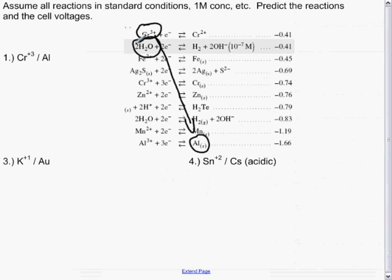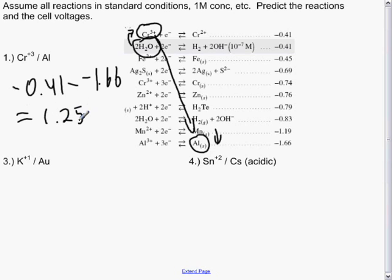Usually, just a rule of thumb, you want these to be as far apart as possible. So, that means the cell voltage will be minus 0.41 minus negative 1.66, which would equal 1.25 volts.